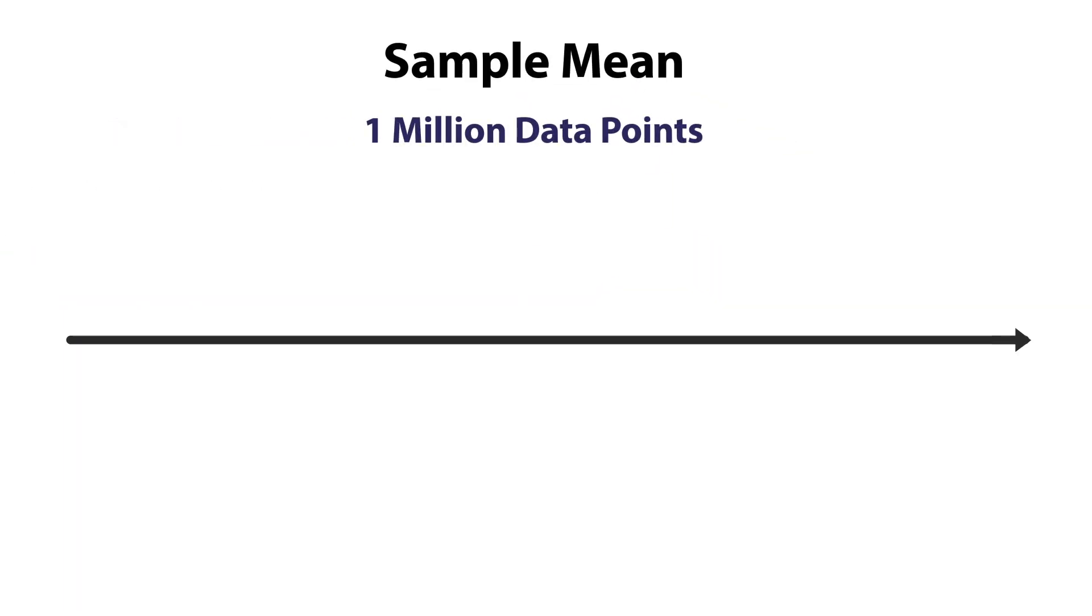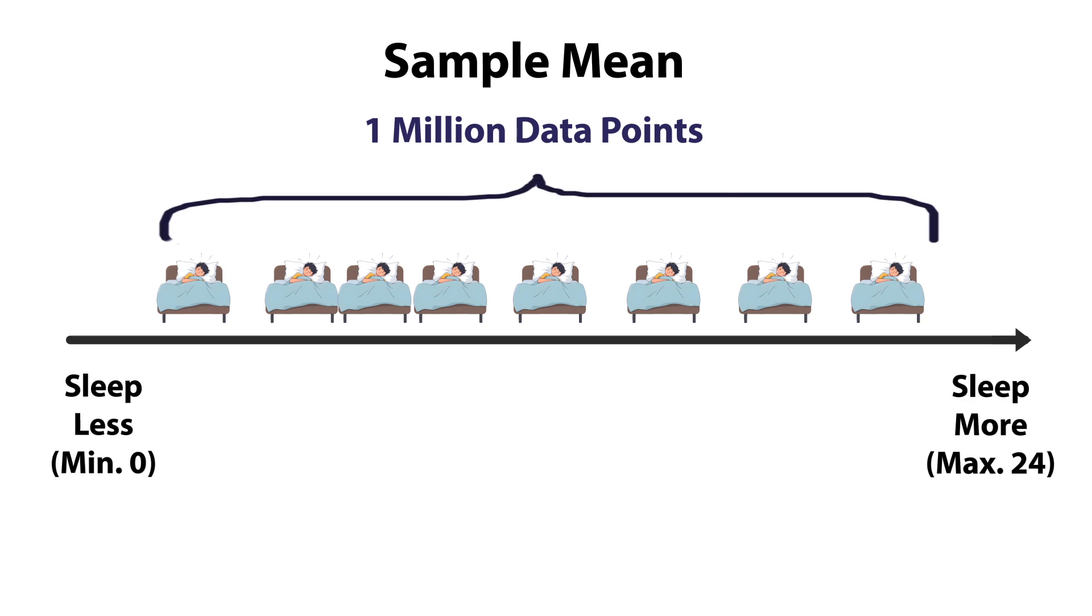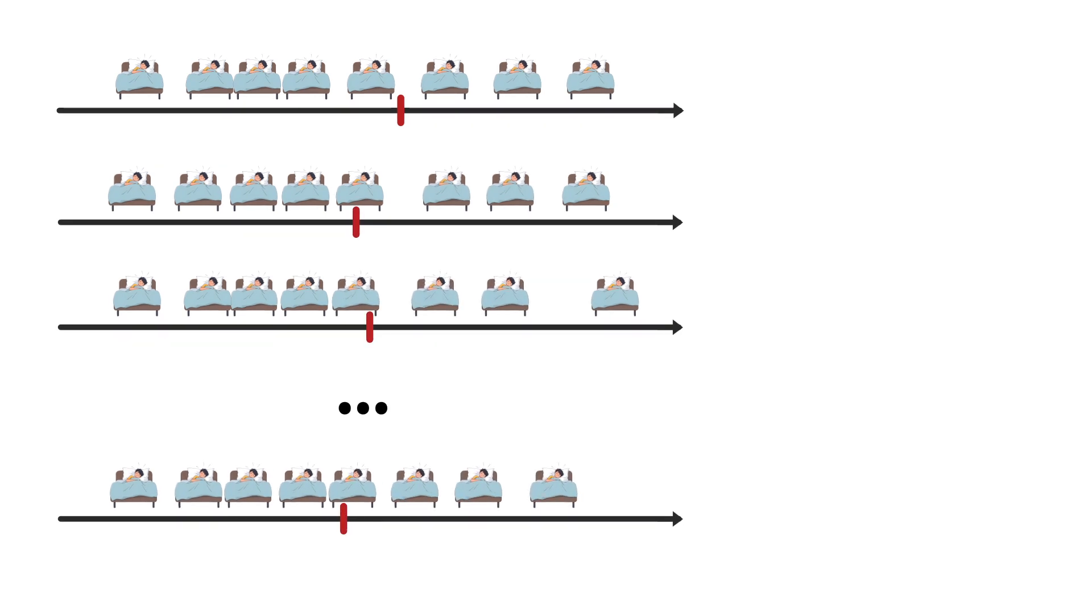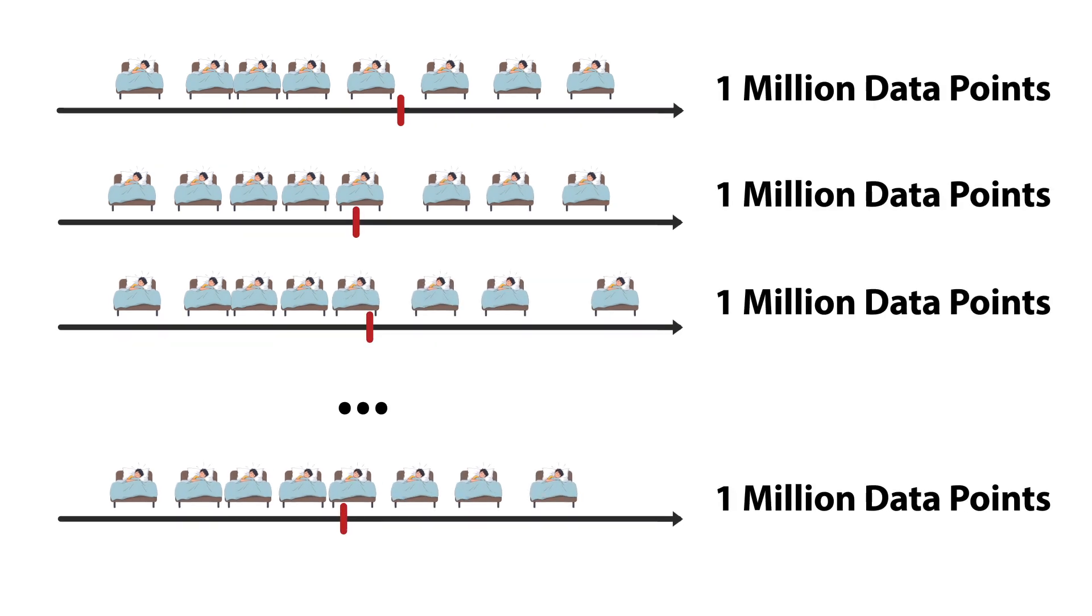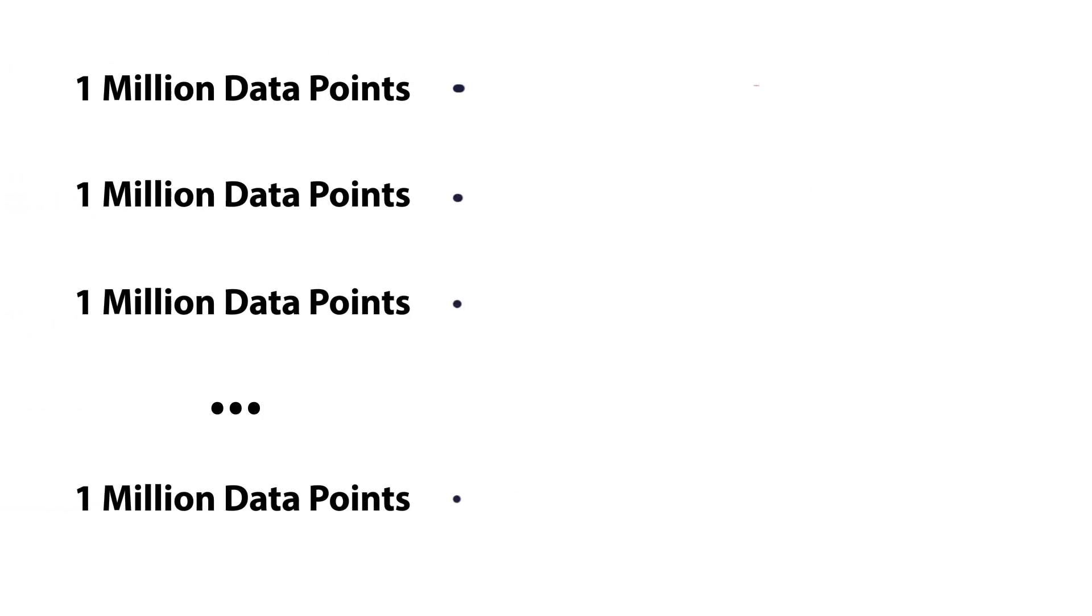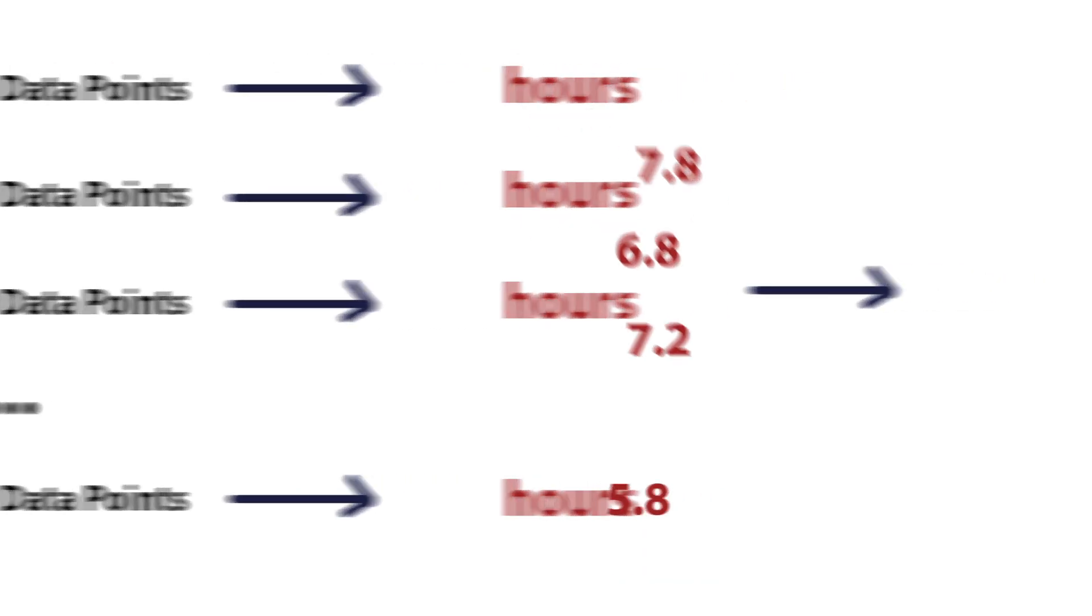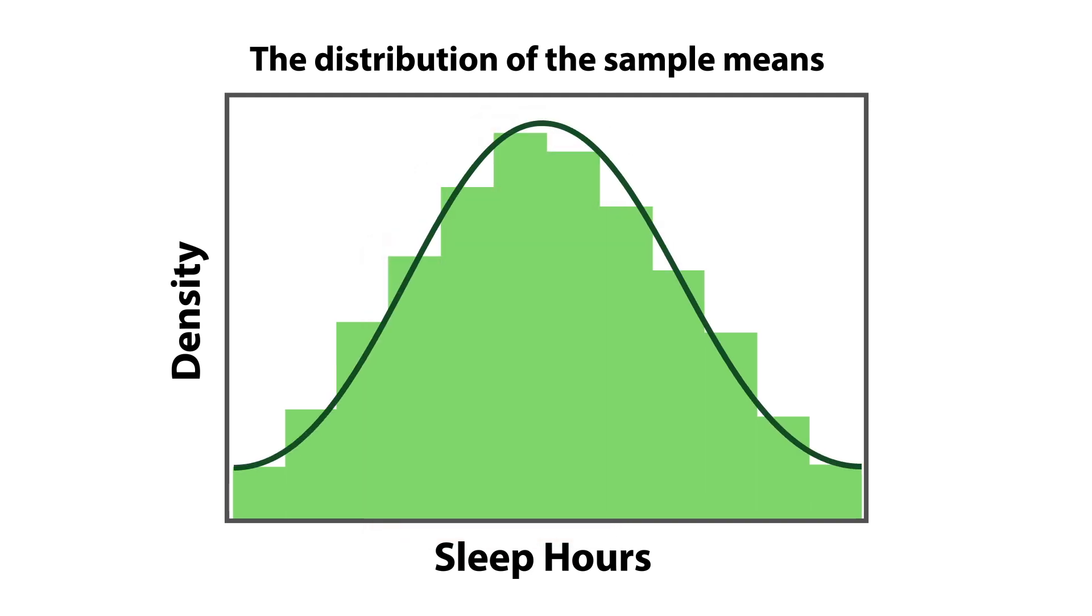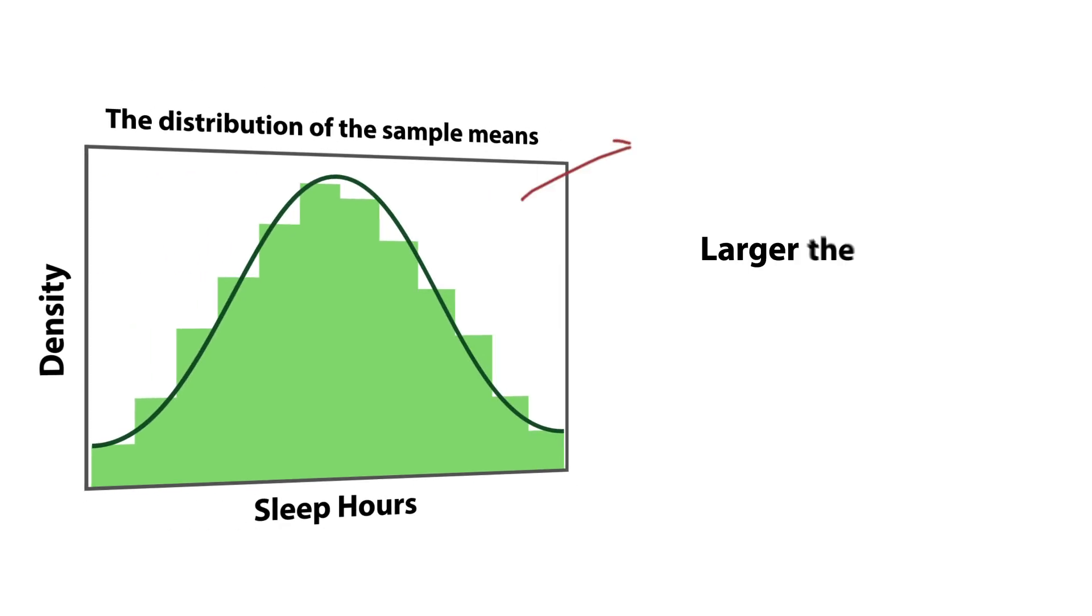We have a sample of 1 million sleep hours. The mean of the sample is called the sample mean. Theoretically, we could collect an infinite number of samples from the population, assuming individuals can appear in multiple samples. Each sample will have its own sample mean. According to the CLT, if we take the means from all these samples and plot their distribution, it will approach a normal distribution as the sample size increases.